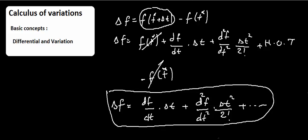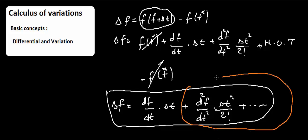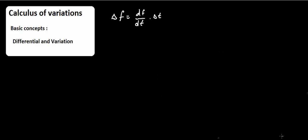When we neglect the higher-order terms in delta-t — meaning delta-t squared and beyond — we are left only with the first-derivative term. So delta-f equals df/dt times delta-t, ignoring higher-order terms. We call this first term the differential of a function, denoted df.